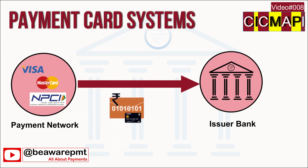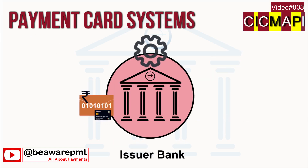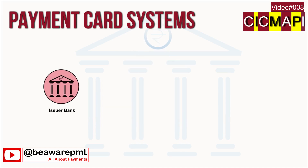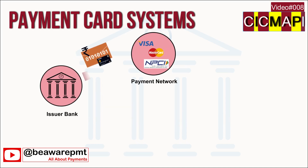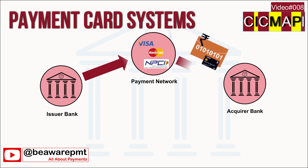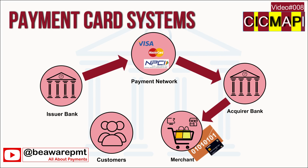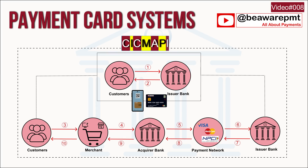The payment network sends the details to the issuer bank. The issuer bank validates the transaction details and sends a success or rejection message back to the payment network. The payment network passes the message to the acquirer bank, and the acquirer bank passes it to the merchant. If the merchant receives a success message, the requested goods or services are provided to the cardholder. The end-to-end card transaction cycle in the CIGMAPI model is now completed.